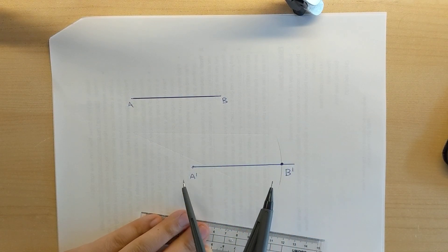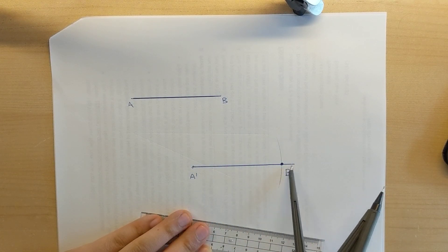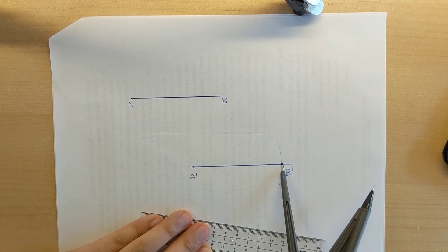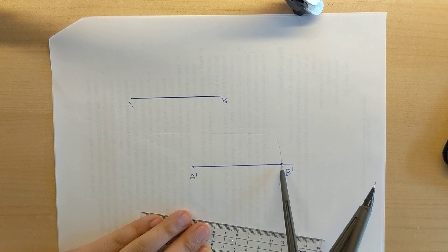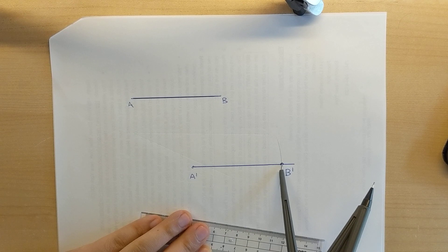You draw a line passing through A prime hitting the arc that you've made. You can draw it longer if you'd like. You cannot draw shorter though. The idea is the line that you draw must intersect that arc and you're calling that point there B prime.